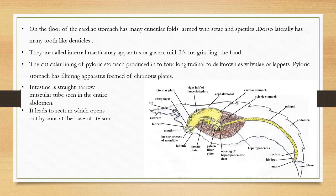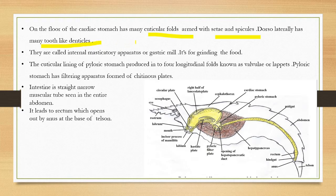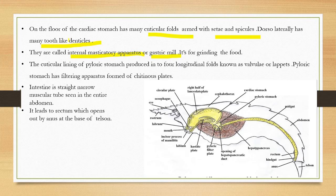The cardiac stomach floor has many cuticular folds armed with setae and spicules. Many denticles are also present internally, and together these structures are called the masticatory apparatus or gastric mill. The function of the gastric mill is the grinding of food particles.